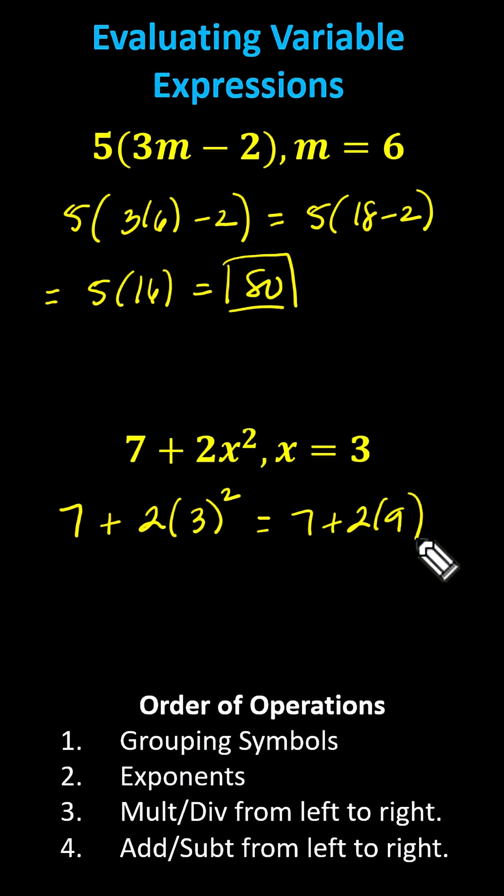The next step is two times nine, which is 18. The expression simplifies to seven plus 18, which equals 25.